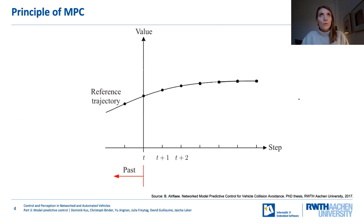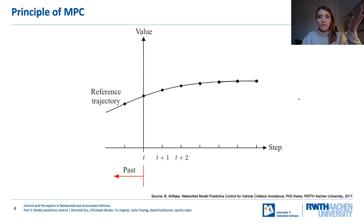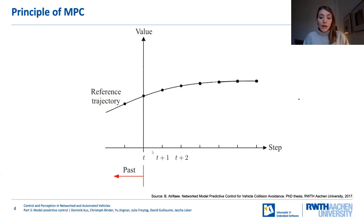Additionally, we have the receding horizon, based on that idea — but what we do here is we only apply the first control input U_T from our optimal solution and discard all other steps. Now I will show two iterations of MPC as an example. First, we see the reference trajectory, which is supposed to be the feasible trajectory to reach our goal set point sequence. For example, let's say our goal is 150 kilometers per hour — no system could reach that instantaneously, so we have a reference trajectory that tries to get to that value in an optimal way. We are at time point T here — on the left is the past, on the right is the future.